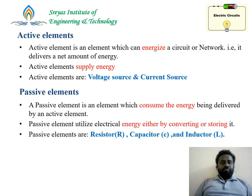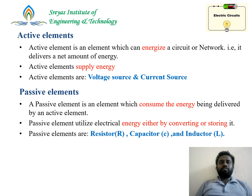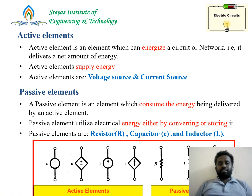Passive elements are those which consume or store energy. A resistor consumes energy, while a capacitor and inductor store energy. So elements which are capable of consuming or storing energy are called passive elements. Examples are resistor, inductor, and capacitor. In the figures, the circle represents a voltage source, the diamond shape is a dependent voltage source, an arrow mark in a circle is a current source, and an arrow mark with a diamond symbol is a dependent current source.